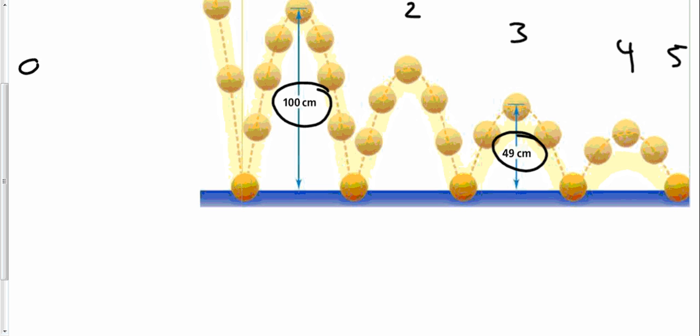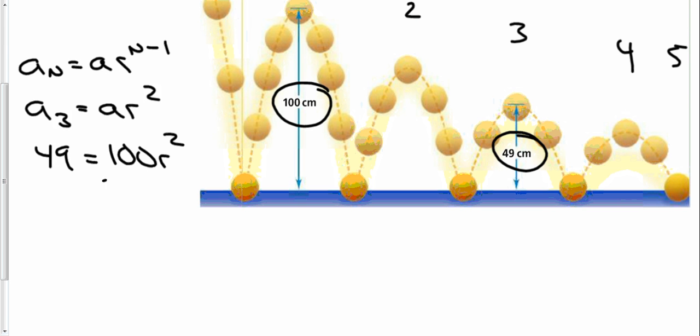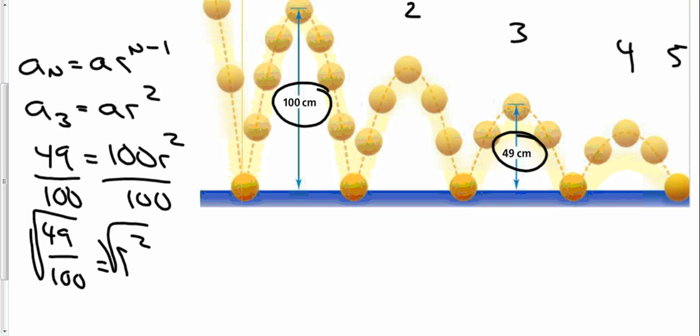So, a sub n equals a times r to the n minus 1. Now, I know the third bounce. Plugging in numbers, that's 49, equals my first term, 100 r squared. Divide by 100. And we get r squared equals 49 over 100. Take the square root of both sides. Gives me my ratio as 7 over 10, or 0.7.